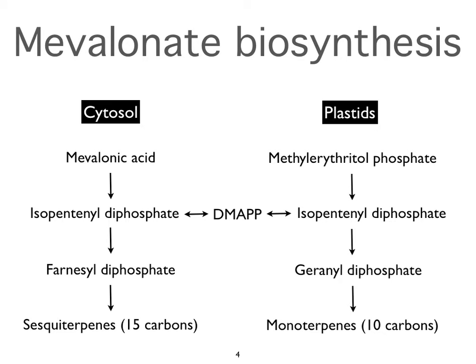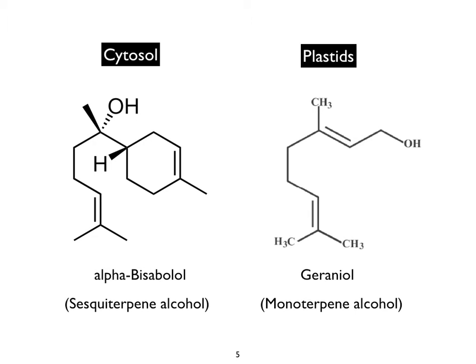These are the two basic biosynthetic pathways, and then it can get very complicated because there are many, many different constituents — hundreds and hundreds — that can be created. To give you an example: alpha-bisabolol is a sesquiterpene molecule and geraniol is a monoterpene molecule. Sesquiterpene molecules have 15 carbon atoms in the molecule, and monoterpene molecules have 10 carbon atoms. That's the basic chemical difference between a monoterpene and a sesquiterpene.